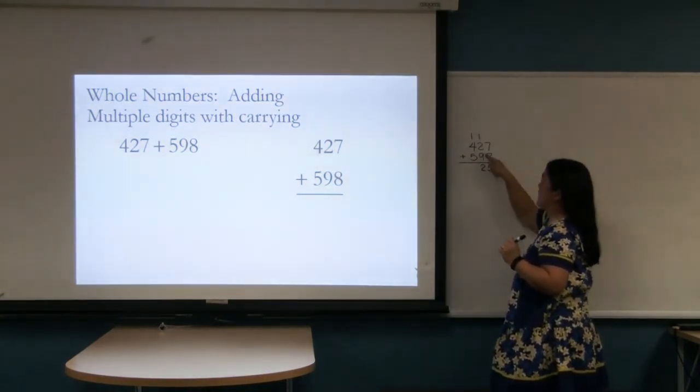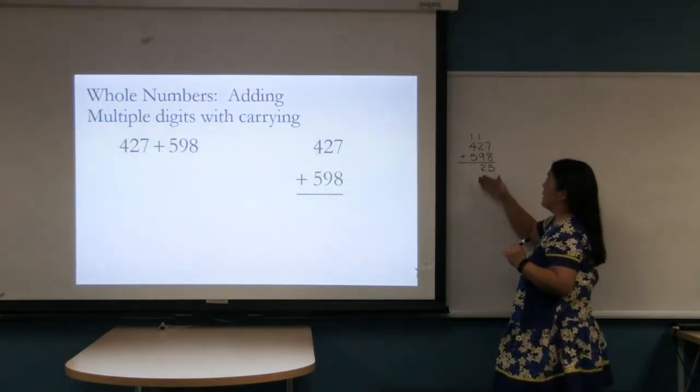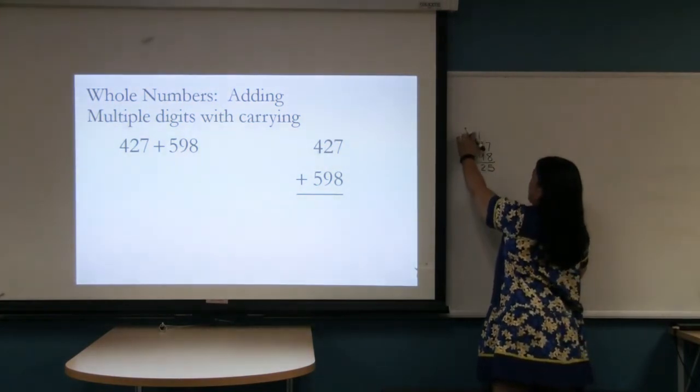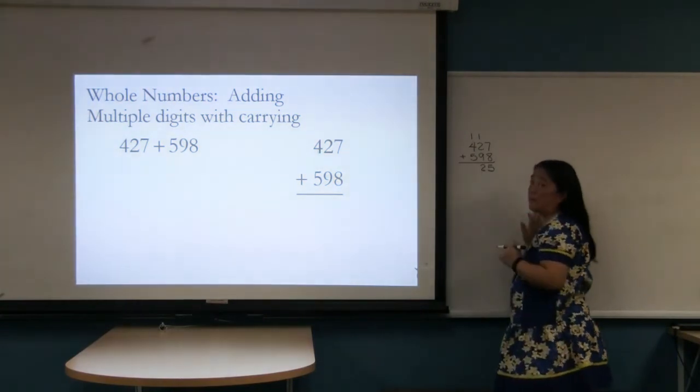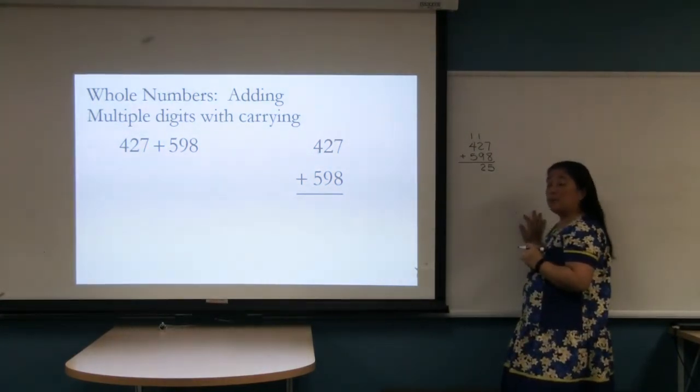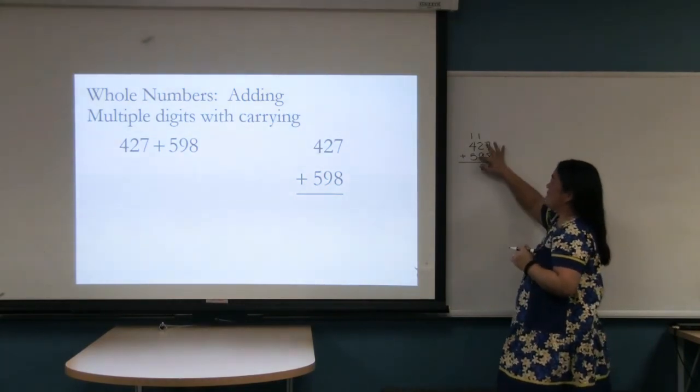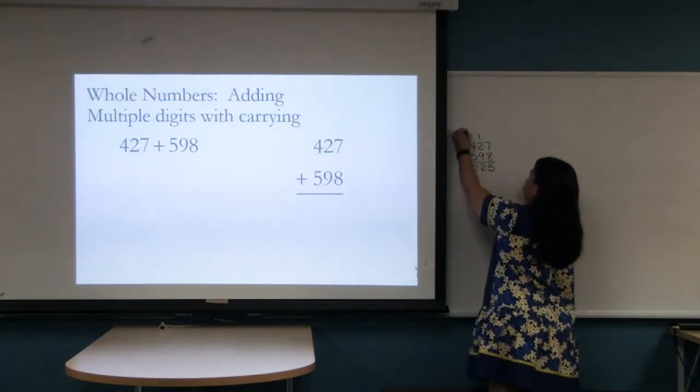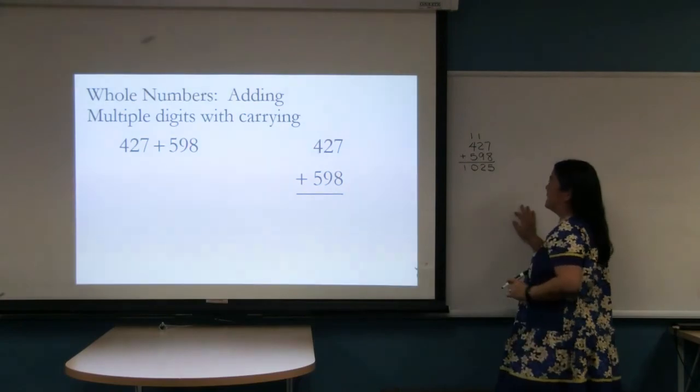And then we're going to add down this way and we're going to get five plus four plus one. You can add them in whichever order because addition is a commutative property meaning that we can change the order on these. So here that gives me a ten and I could put the zero and carry the one up here into the non-existing column but it will just be a ten.